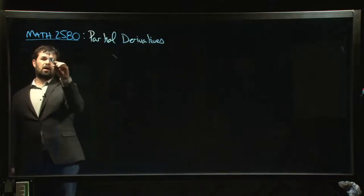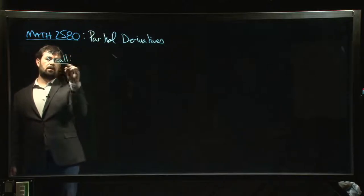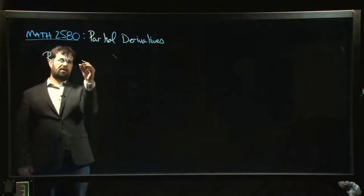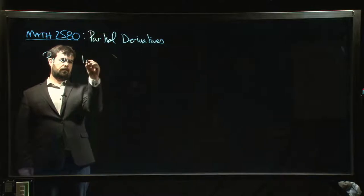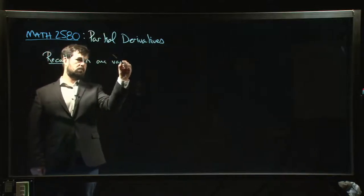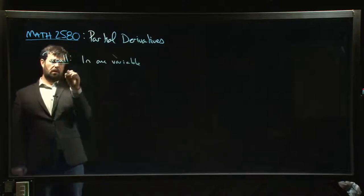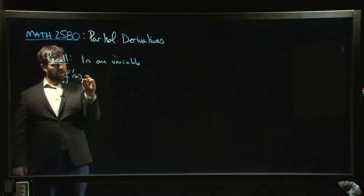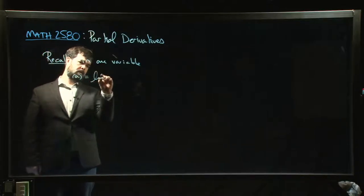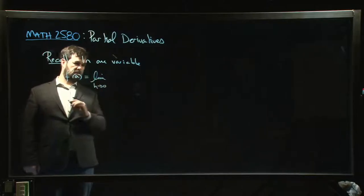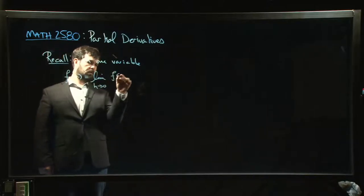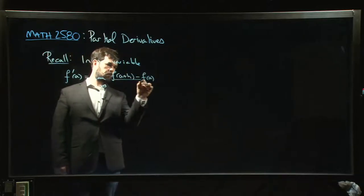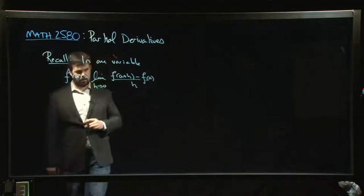But let's think about where does the need for a partial derivative come from. Let's think back to how things look in calc 1. In calc 1 we have this definition of a derivative that says something like this: in one variable we say there's this thing called the derivative of a function and it's defined as a limit.